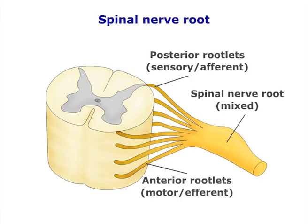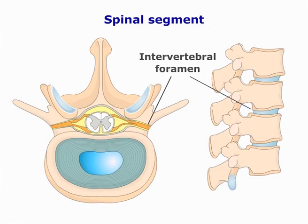A nerve root is a bundle of motor and sensory nerve fibers arising from the ventral and dorsal parts of the spinal segments.